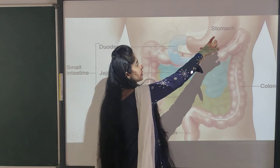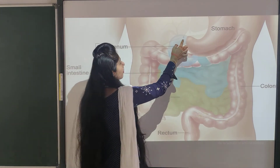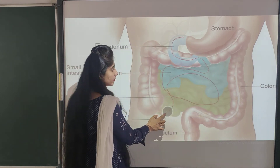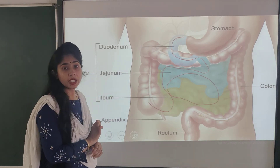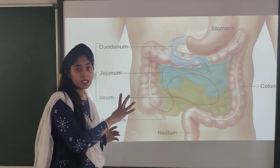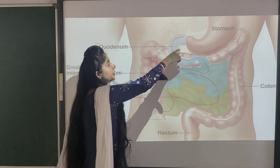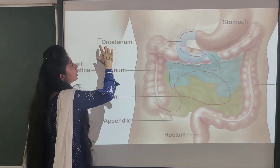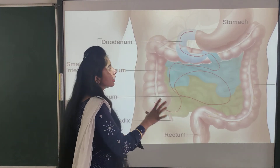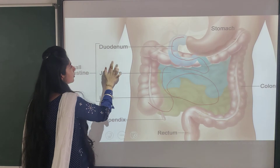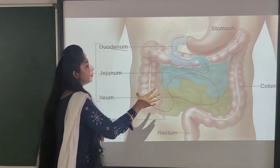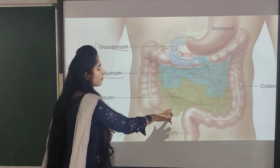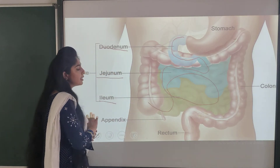The small intestine is connected to the stomach on one side and to the large intestine on the other. The top part connected to the stomach is known as the duodenum. The middle part of the small intestine is known as the jejunum. And the lower part, which is connected to the large intestine, is known as the ileum.